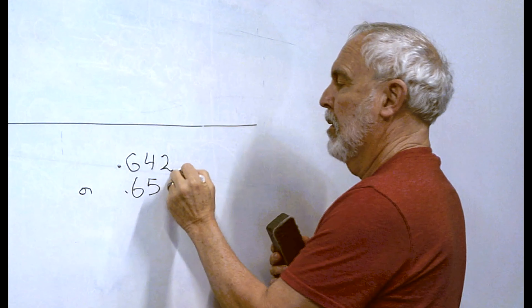Every measurement you make has an estimated digit. We also make it by estimating to tenths between the lines. So let's try a couple.